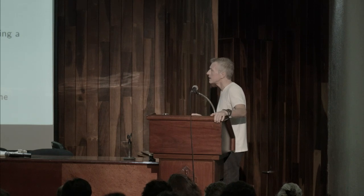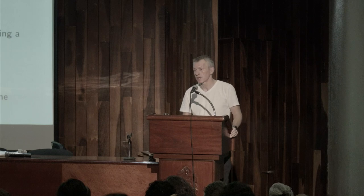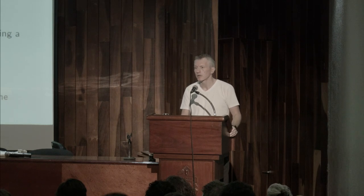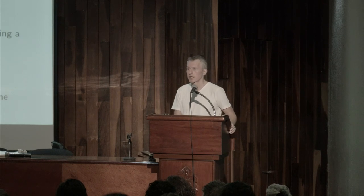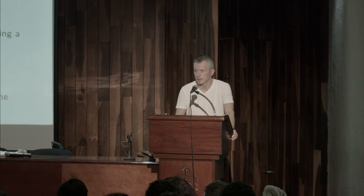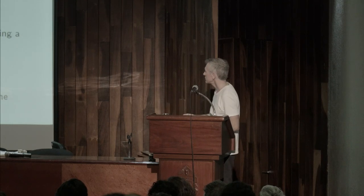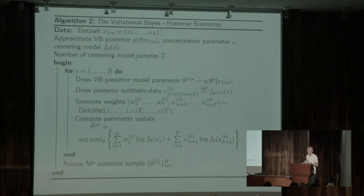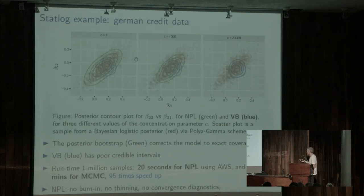In response to a question: in high dimensions the optimization of the weighted log likelihood is the challenging part. In high dimensions, the synthetic data size T needs to be large, which slows things down since you're now optimizing over n plus T data points. We took some variational Bayes models — which are well known to be good predictors but have really bad coverage — and showed that you can correct them using posterior bootstrap sampling.